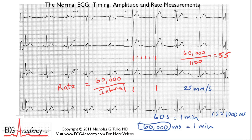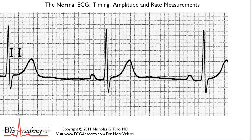You can count backwards and forwards as well. Here's a P wave that lands on a heavy line, and you can count backwards: 200, 400, 600, 800, 1000, 1040 — and then plug that calculation in. But there is an easier way.